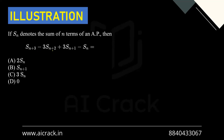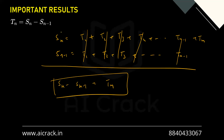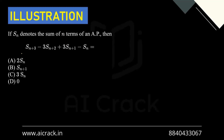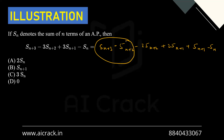Now let's solve: if Sn denotes the sum of n terms of an AP, find Sn+3 - 3Sn+2 + 3Sn+1 - Sn. This property applies to consecutive terms. We can break it down: Sn+3 - Sn+2 forms one pair, then -2·Sn+2 + 2·Sn+1 forms another pair, and Sn+1 - Sn forms the third pair.